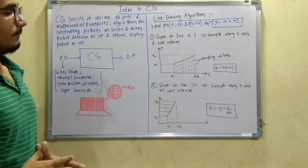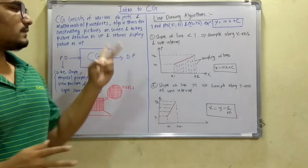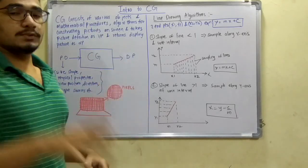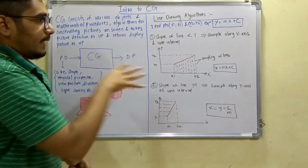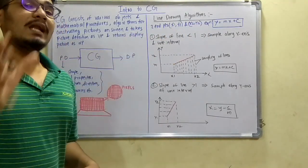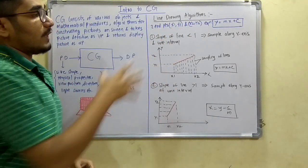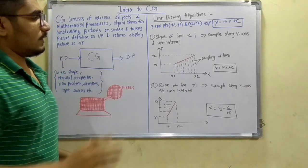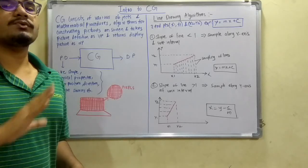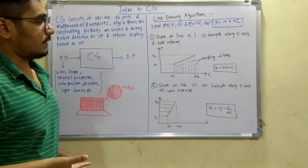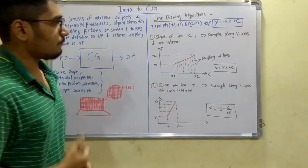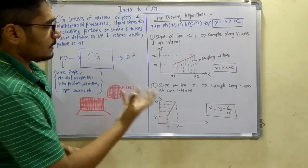There are two main cases depending on line drawing algorithms. If the slope of the line, which is m in this case, is less than one, then you have to sample along the x-axis at unit intervals, meaning at a steady interval of one unit.